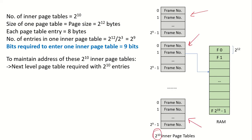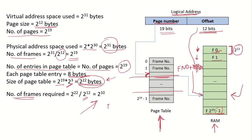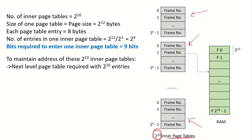This means there will be 2^10 inner page tables. The size of each frame is 2^12 bytes, and since each page table entry is 8 bytes, each inner page table (one per frame) has a size of 2^12 bytes, which is one page.